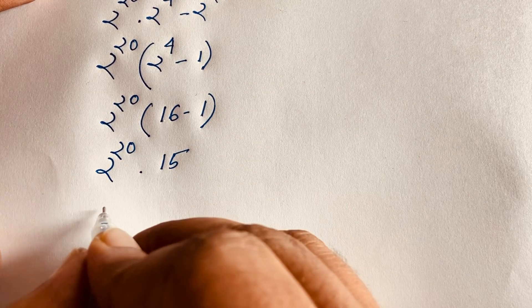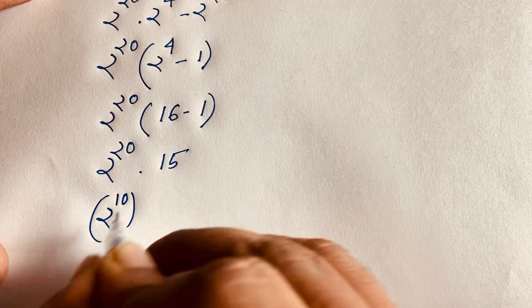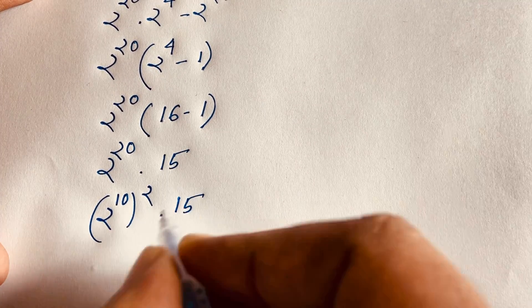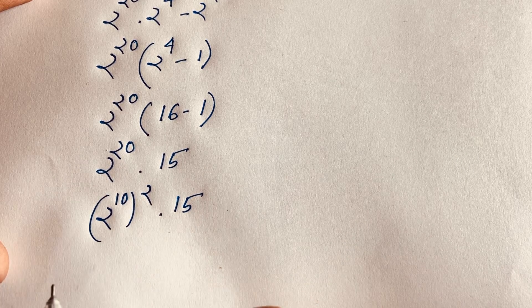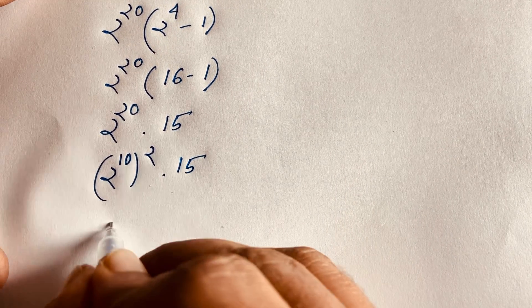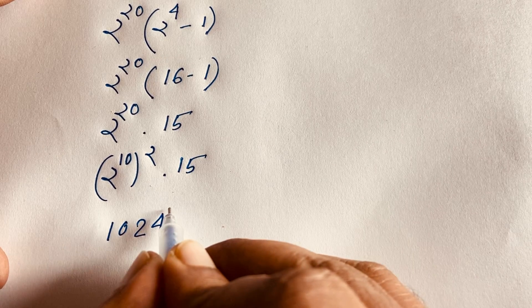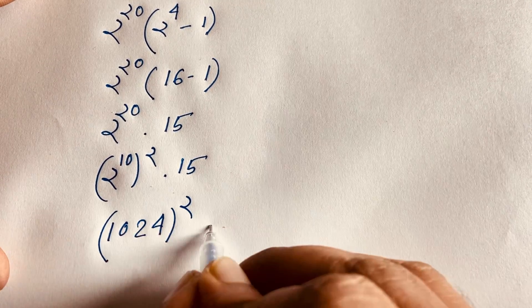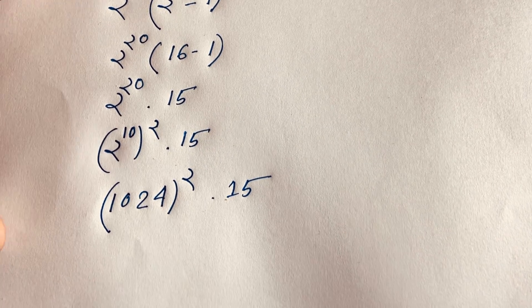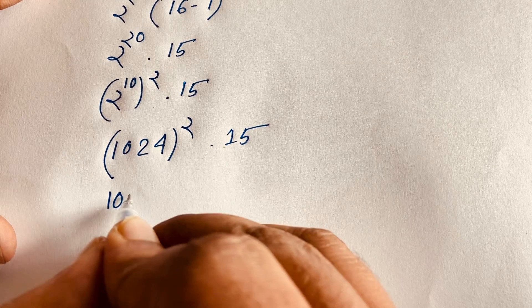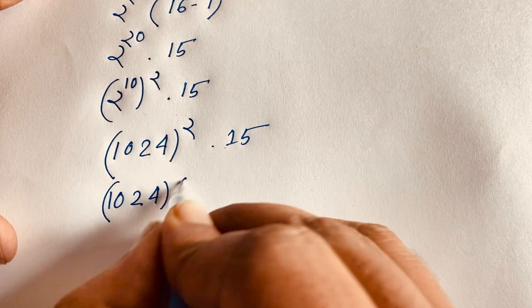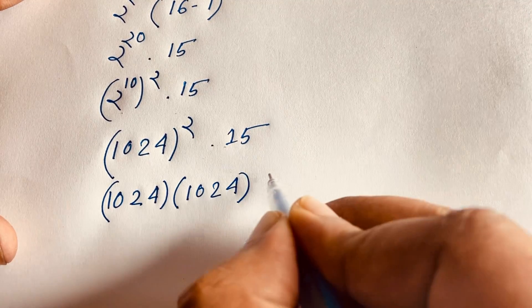Now to evaluate 2 to the power 20 times 15: we can write 2 to the power 20 as (2 to the power 10) squared, times 15. Since 2 to the power 10 equals 1024, this becomes 1024 squared times 15, which equals 1024 times 1024 times 1024 times 1024 times 15.